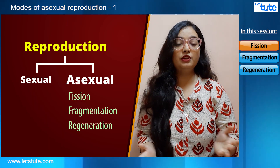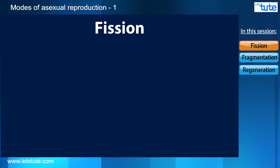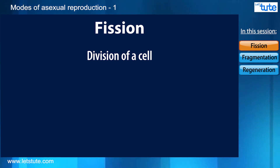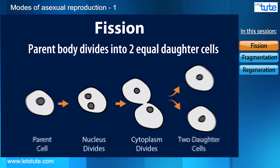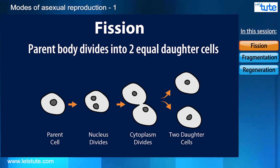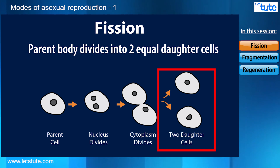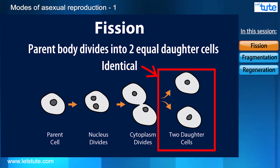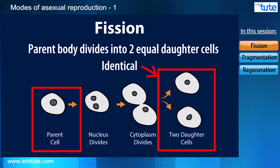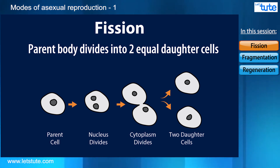The first method is known as fission. Fission simply means the division of a cell. Fission is the process in which the parent body divides itself — the nucleus and cytoplasm — into two equal daughter cells. The two new daughter cells formed are identical to each other as well as very much identical to their parents. Fission is a very simple method which occurs in unicellular organisms.